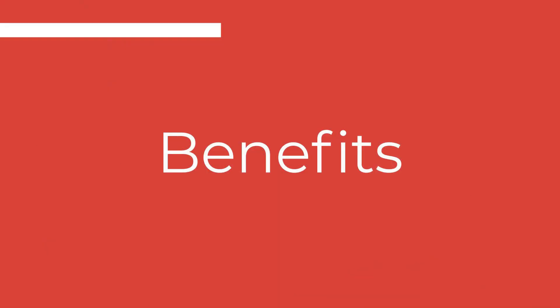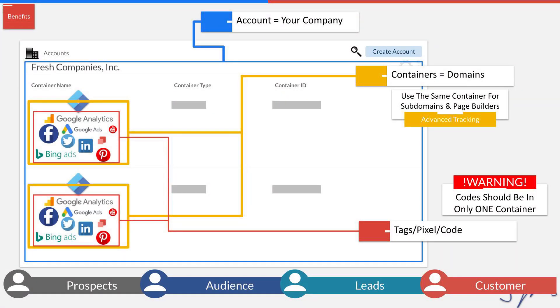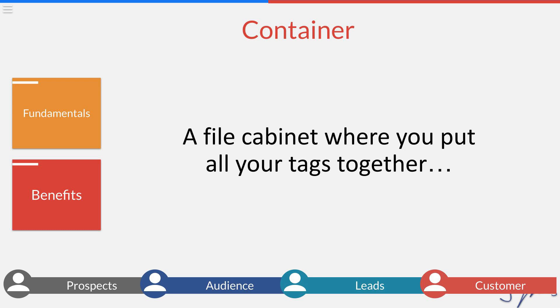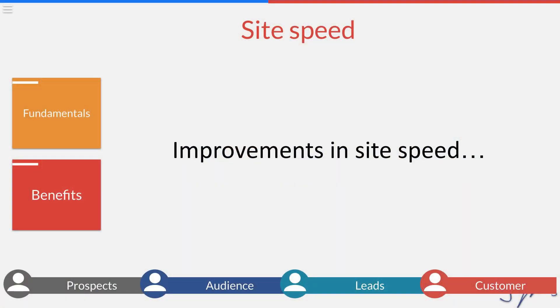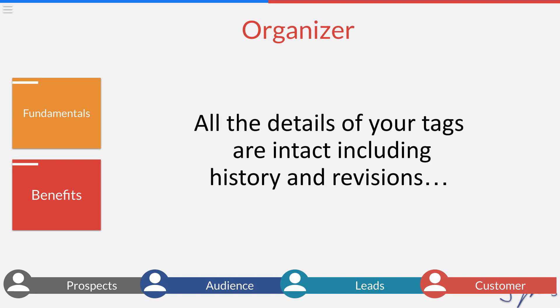Enter Tag Manager. What Tag Manager does is take all those tags and pixels and put them into one container, so you only have to add code once to your site. Now there are some big advantages to this. Number one, it's going to dramatically speed up your site, because Tag Manager is going to order all of these instead of them being all jumbled trying to fire whenever they want. Tag Manager forces them to fire in a specific way, so your page doesn't take a super long time to load every time someone visits your website or clicks on a new page.